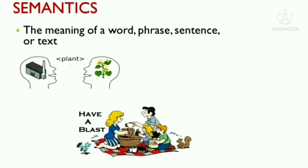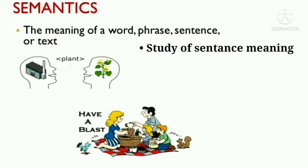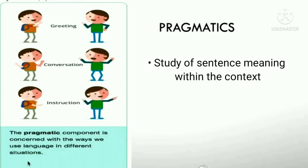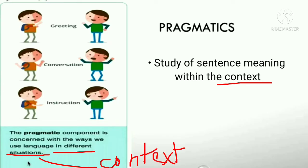Semantics is the study of sentence meaning — the meaning of words, phonemes, or text. Pragmatics takes semantics one step further because it is the study of meaning within a certain context. In simple words, it is about word meaning and in which context it is used — the way we use language in different situations and different contexts.